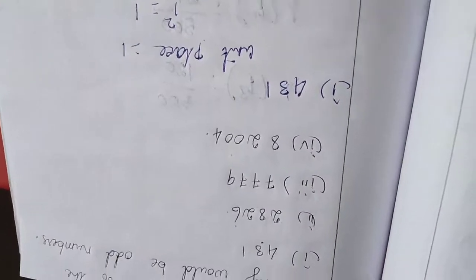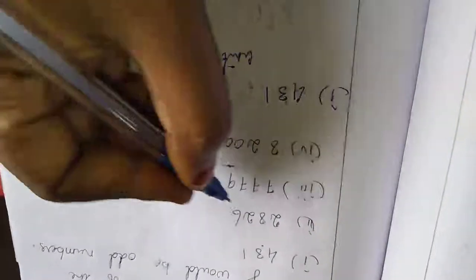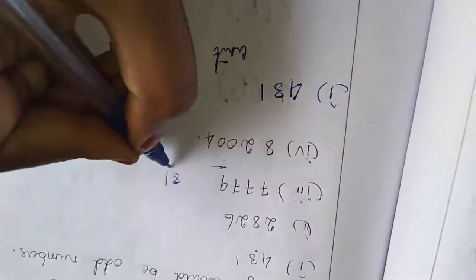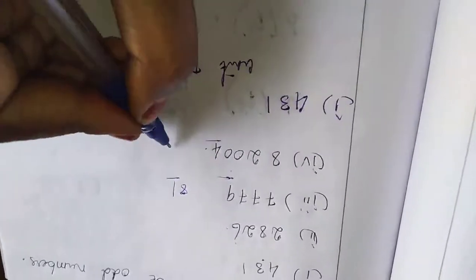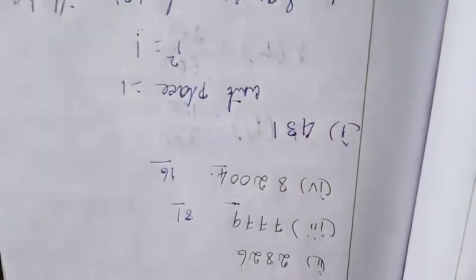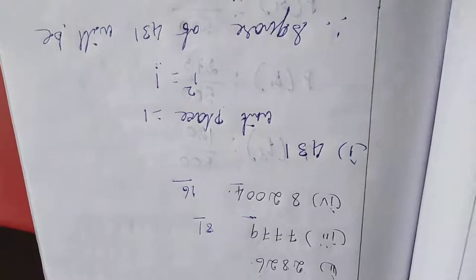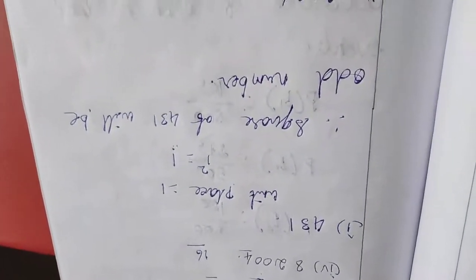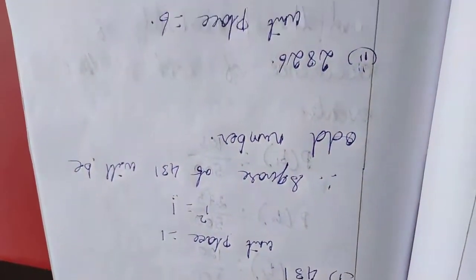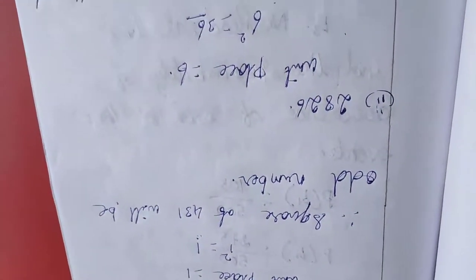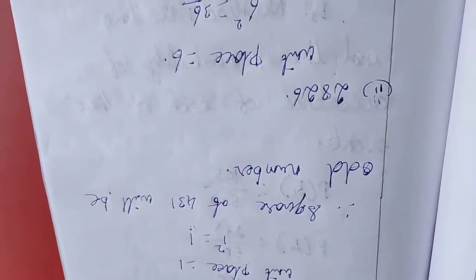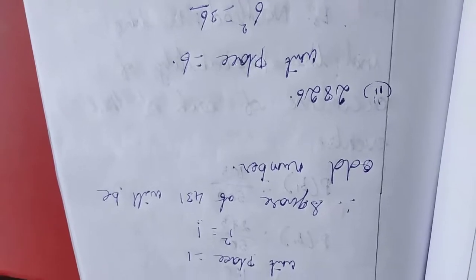Third and fourth is homework for you. I am telling the answer. 9 squared is 81, so this also odd number. 4 squared is 16, so this will not be an odd number. Like this is the answer. Up to this, first three sums is completed. In next class, we will move to the next sum. Thank you. Complete the homework, do the copy, copy the note. Thank you.